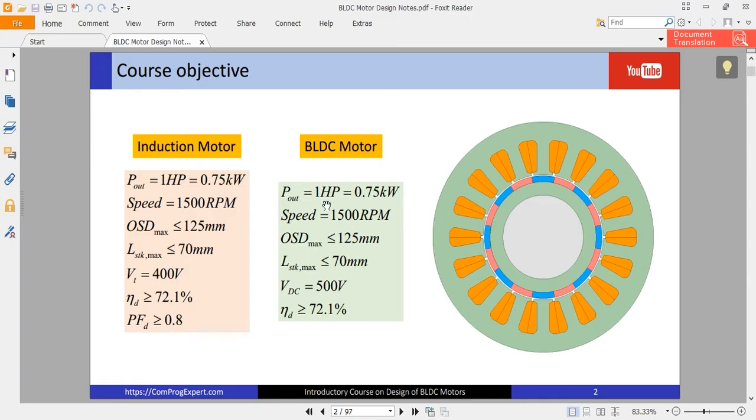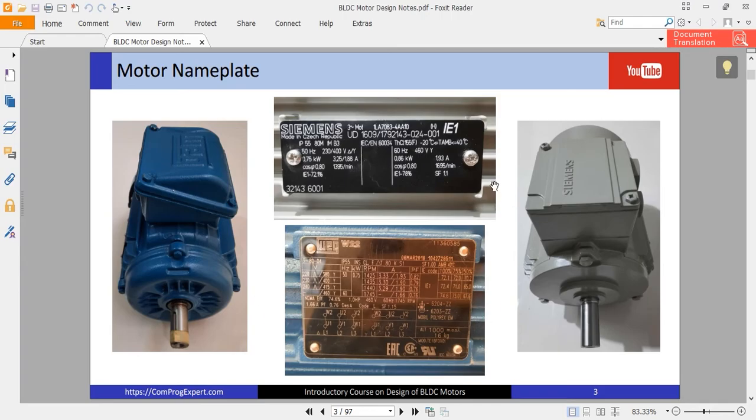And what we are going to do is design of a counterpart BLDC motor for the same output power and speed in the same frame number, and see how much is the difference between the efficiency of our design and the existing induction motor and compare them in terms of line current, power density, motor weight, and so on.